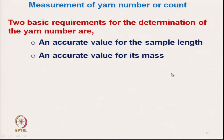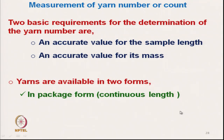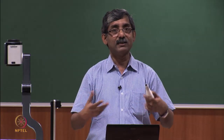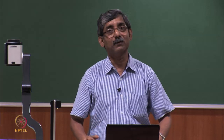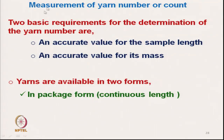We need to know: what is the actual length of a particular mass of yarn, and if we know the length, what is the actual mass? Yarns are available in two forms for measuring count: one is a continuous form, and another is a cut form — small lengths. In package form such as bobbin, cone, or cheese, longer continuous lengths are available, and we can measure the count using different measuring techniques.